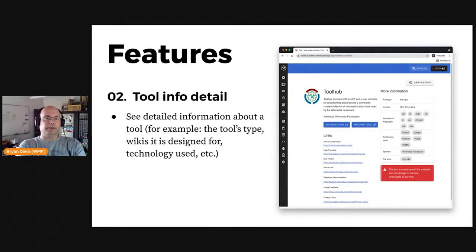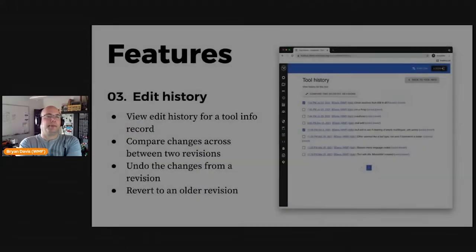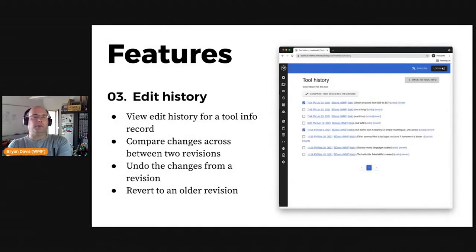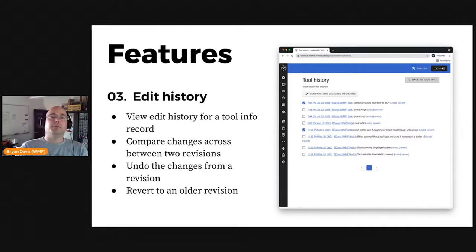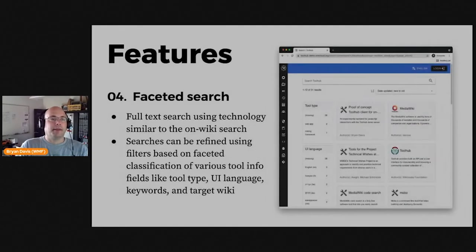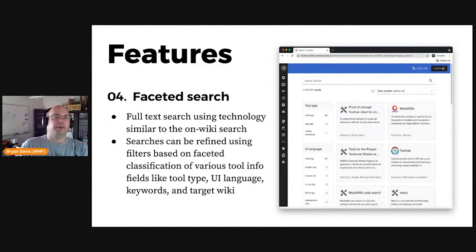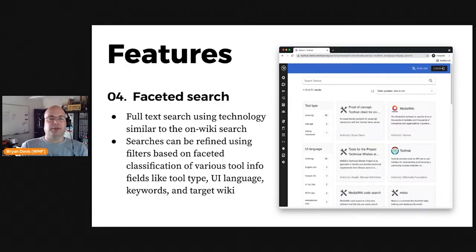Each tool info card links to a more detailed page listing all the information that Toolhub has about the tool, including links to the tool itself and, if available, links to source code, bug trackers, etc. Tool records have a history view, similar to wiki pages, where you can see what has changed over time and who made the changes. When using search, users can refine searches by selecting common values from matched documents. These facets are a sort of search navigation you've probably seen on e-commerce sites, where a list of departments, sizes, or colors is shown along with the results, and you can click them to add that attribute and value to the search constraints.